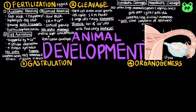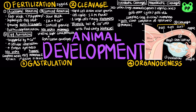In human development, ovulation releases the secondary oocyte, and fertilization takes place in the fallopian tube, creating a zygote. As the zygote travels down the fallopian tube, it undergoes cleavage from the 2-cell stage to the 16-cell stage known as the morula. The blastocyst forms 5 days after fertilization and implants into the endometrium 7 days after fertilization.